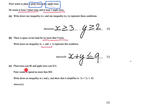The last question here. Plum trees are six dollars and apple trees fourteen dollars. Peter wants to spend no more than eighty-four dollars. So eighty-four dollars or less. Write down an inequality in X and Y and show that it simplifies to 3X plus 7Y is smaller or equal to forty-two. So basically they give you the answer and you've got to show that that is true.